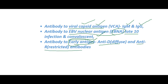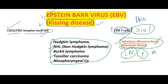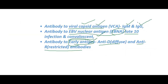As already mentioned, EBV causes carcinoma. Except for IgM, all other antibodies — EBV IgG, antibodies to early antigen such as anti-D and anti-R — are present in carcinoma. Thank you, and please subscribe if you like the video.